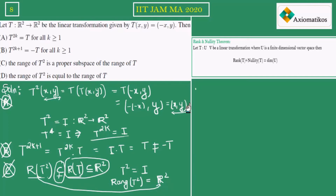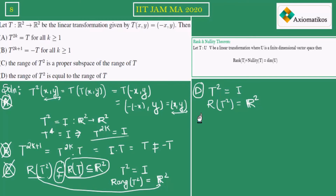Now let us come to option D. Option D suggests that range of T² equals range of T. We know T² is the identity operator, so range of T² is R². Now we need to determine the range of T, and to do that we need to determine the nullity of T.